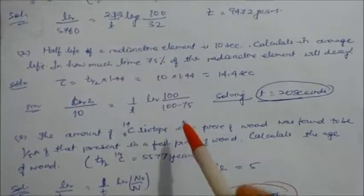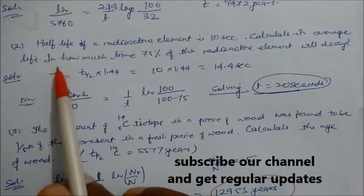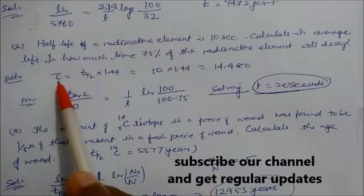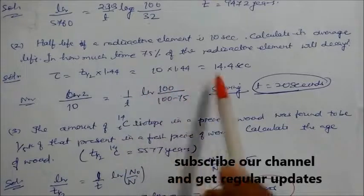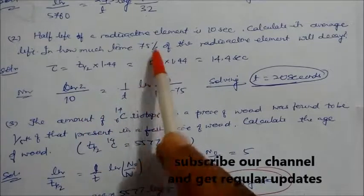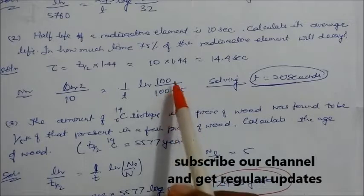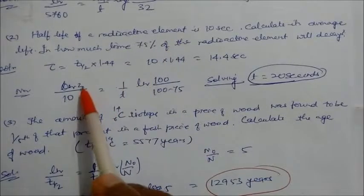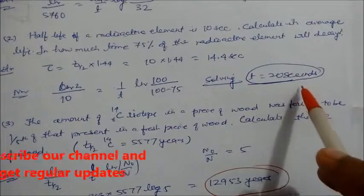Problem 2: The half-life of a radioactive element is 10 seconds. Calculate its average life and in how much time 75% of the radioactive element will decay. Average life is 1.44 multiplied by the half-life, giving 14.4 seconds. For 75% decay, 25% is left, so using first order kinetics with k and t½ = 10 seconds, you get t = 20 seconds.